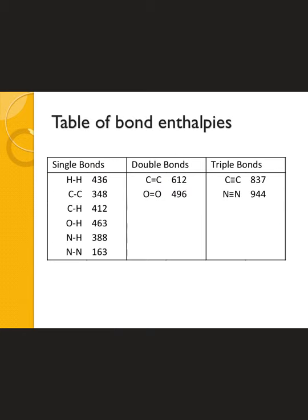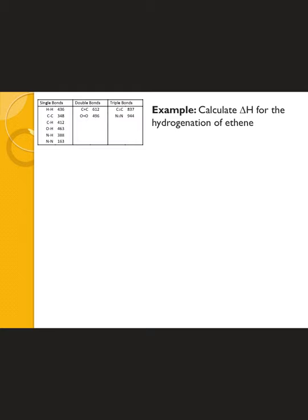Most of the work we're going to do with calculating bond enthalpies will be in context of organic compounds. This is the table given in your notes and in your IB data booklet, to be used on the actual IB test next year. These are where the numbers are going to be pulled from anytime you have single bonds, double bonds, or triple bonds of carbon, hydrogen, oxygen, nitrogen, or any combination thereof.